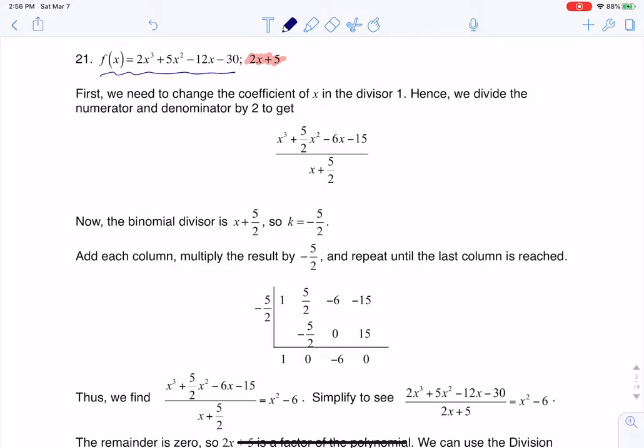The factor theorem says that if k is a zero of the function, then x minus k is a factor. The thing with the factor theorem is that in order to make this work, you have to have a lead coefficient of 1 here. Right now, I don't have a lead coefficient of 1, I have a lead coefficient of 2. So it makes this problem that much trickier.